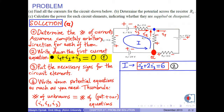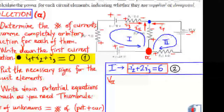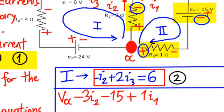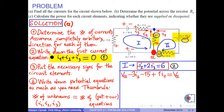To find the last voltage equation, we use path 2 to go from A back to A. Starting with VA, for resistor R2 we take the upper (negative) sign: negative 3 times I2. For battery E3, we take the lower (negative) sign: minus 15 volts. For resistor R3, we take the leftmost (positive) sign: plus 1 times I1. After VAs cancel, we obtain negative 3I2 plus I1 = 15. We call this equation 3.